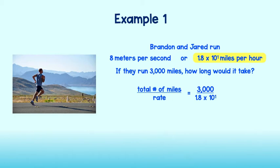Now we can rewrite 3,000 in scientific notation. 3 divided by 1.8 is approximately 1.7. Using the quotient rule, we can subtract exponents to get 10 to the second power. It will take approximately 1.7 times 10 to the second or 170 hours to run across the country.